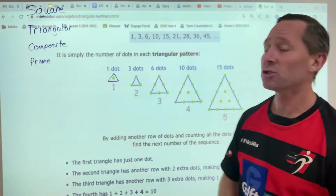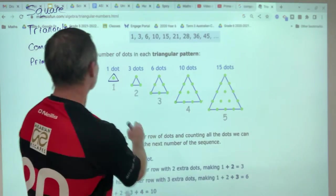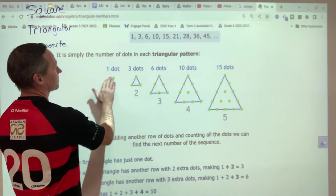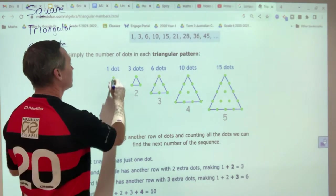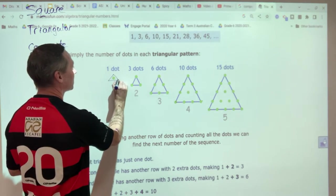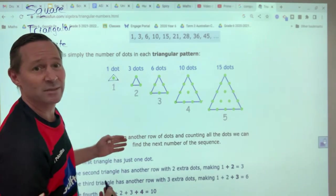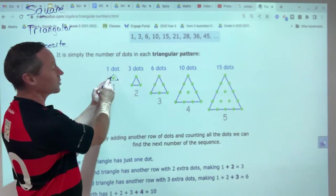So here I have triangular number. The first particular one is just one dot. So the first triangular number is one. I've got a triangle around it, equilateral triangle, makes it easier. So I've got one dot here.